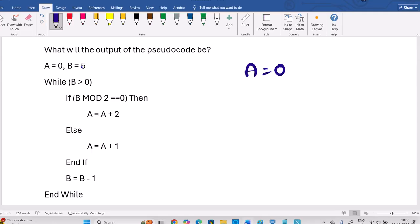So A is 0, B value 5. Now, first condition B greater than 0. Yes, we can enter into the while loop. And initially, B is even number, B mod 2 equal to 0, B is even number. Definitely, when B is divided by 2 remainder is 0, modulo operator.